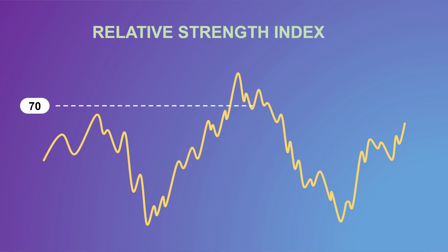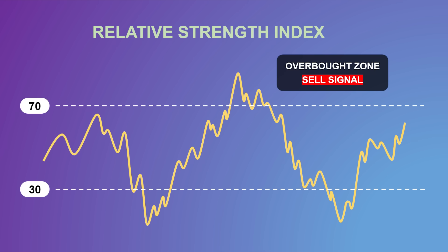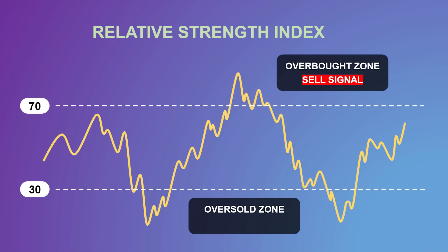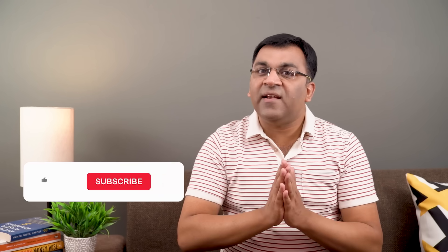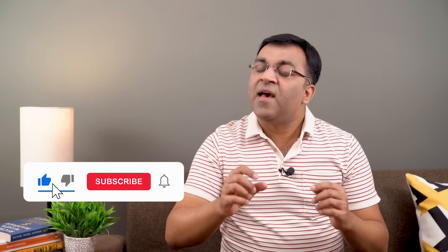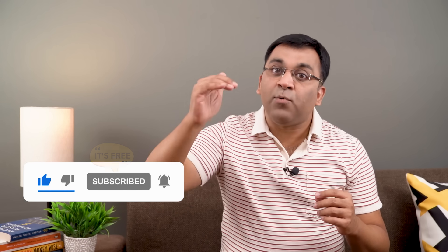In RSI terms, if this number is above 70, then the stock is considered to be overbought, which means an investor can consider selling it. When the RSI is below 30, then it's an oversold situation which can be interpreted as a buying signal. The RSI oscillates between 0 and 100, and in addition to giving buy and sell signals, this technical indicator also identifies stocks that are ready for a trend reversal or a corrective pullback in price.